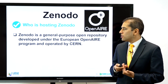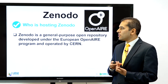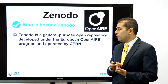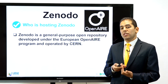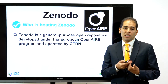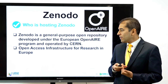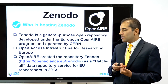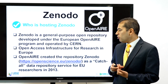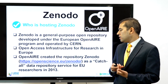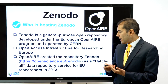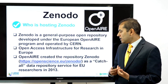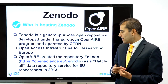Zenodo is a general-purpose open repository developed under the European OpenAIRE program and operated by CERN. It is free, has open access infrastructure for research in Europe, is based on open FAIR principles, and has been a catch-all data repository service for EU researchers since 2013. Their link is available at openscience.eu.